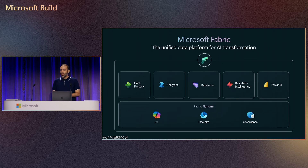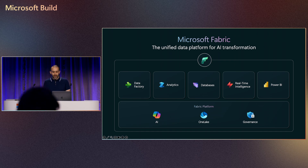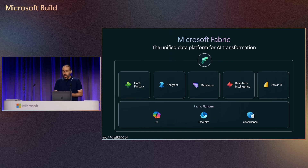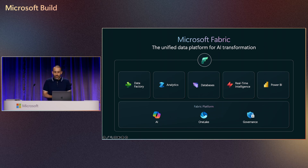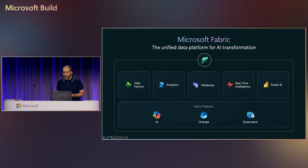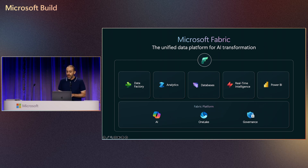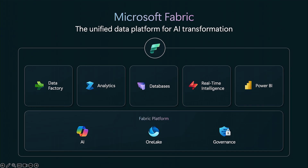For those of you who don't know much about Microsoft Fabric, it's a unified data platform for AI transformation. AI is basically infused throughout the Fabric platform and all of the experiences. In each of these workloads — from data factory, data ingestion, analytics, to Power BI — you'll find dedicated AI experiences tailored to different personas. In this session, I'm going to focus especially on building custom gen AI for your own data.